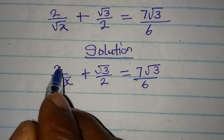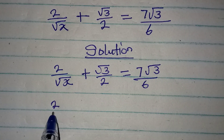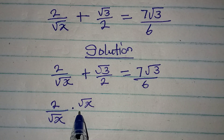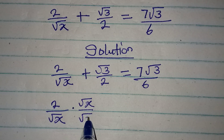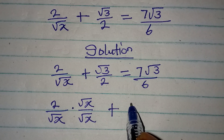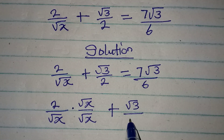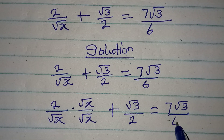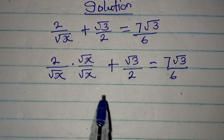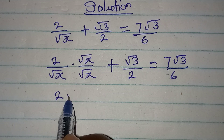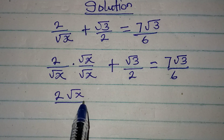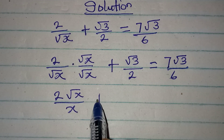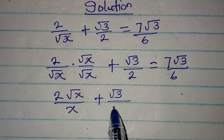To rationalize, I'll have 2 over square root of x multiplied by square root of x over square root of x, then plus root 3 over 2, equal to 7 root 3 over 6. So from here, 2 times root x gives us 2 root x over root x times root x, which gives us x, plus root 3 over 2.